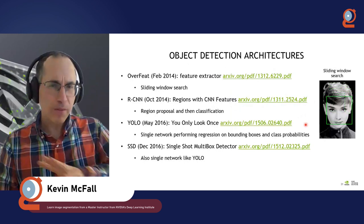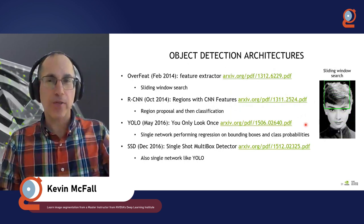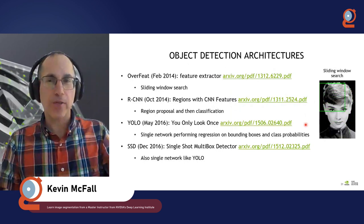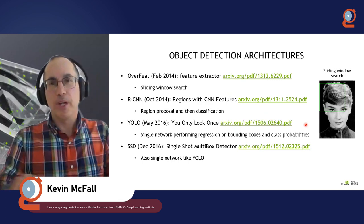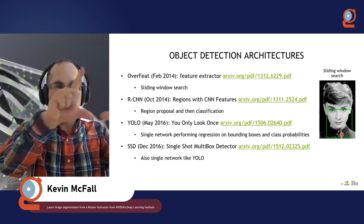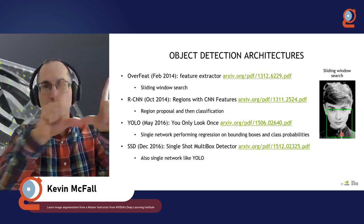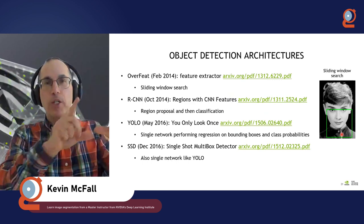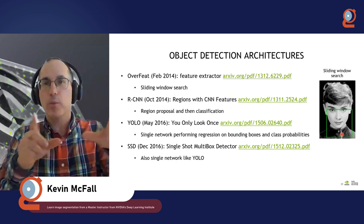For object detection, the simplest approach is a sliding window search: move a window across the image and perform classification at each position.